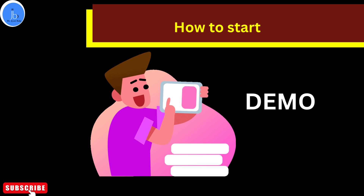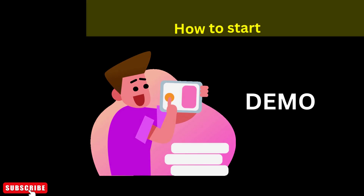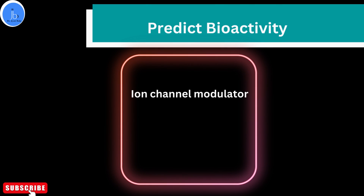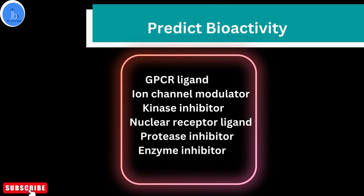Additionally, you can also calculate and predict the bioactivity score for the most important drug targets like GPCR ligands, kinase inhibitors, ion channel modulators, and nuclear receptors.